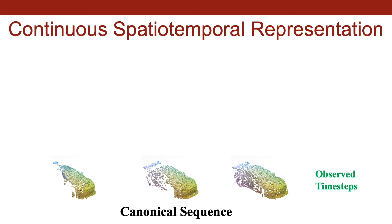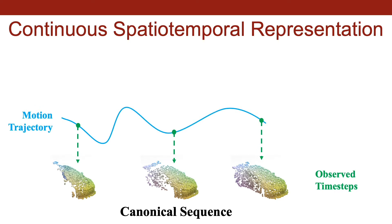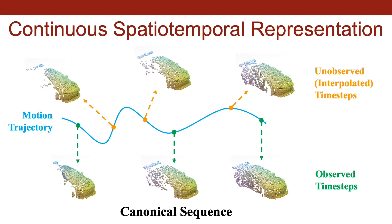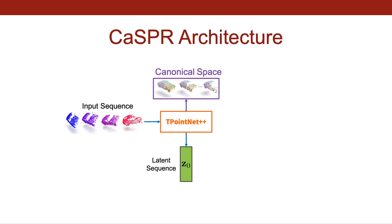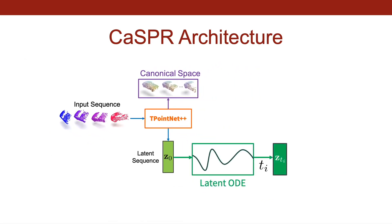We now have each observed step in the canonical space, but we are interested in continuously modeling the spatiotemporal input. In other words, we want a representation even for unobserved time steps at arbitrary temporal resolutions. To achieve this, CASPER uses a neural ordinary differential equation in the latent space. Neural ODE trajectories compactly encode the change in object shape over time, and can be solved up to any desired time step.